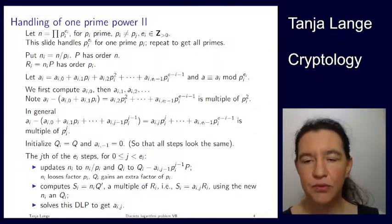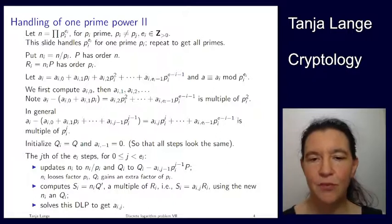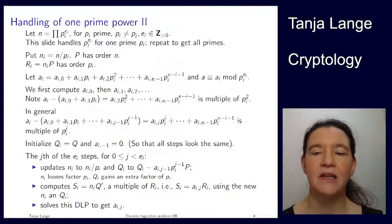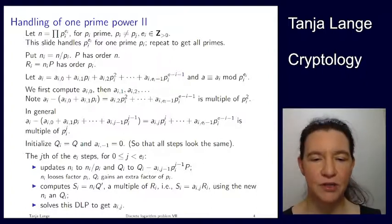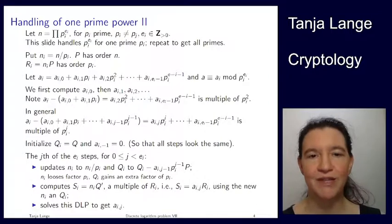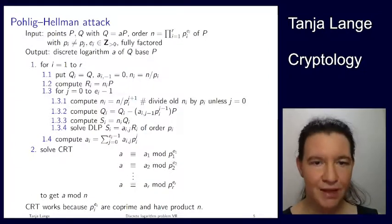Okay, so then you're computing the next coefficient. Well, we have computed aj minus 1, so we're now computing aj, the aij, and then we're getting the discrete log. All right, hopefully without typos, here is the full algorithm.